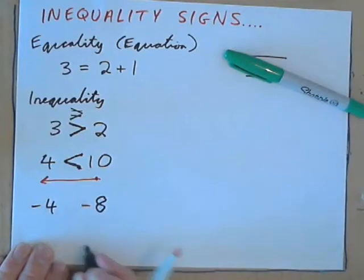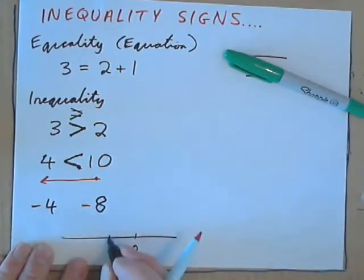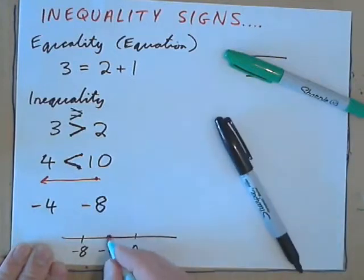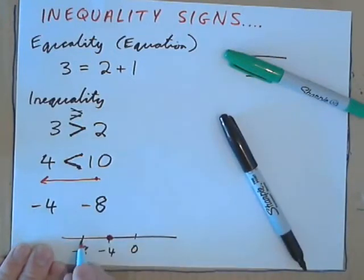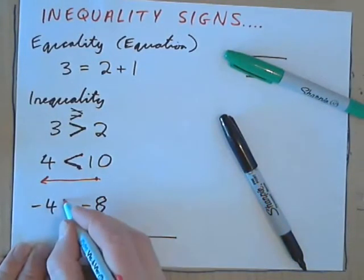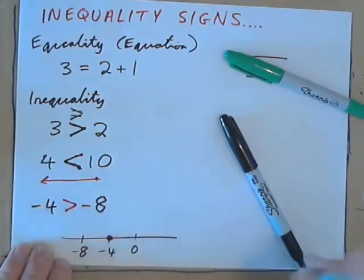So, this is actually greater than this. This is lesser. Now, if you think about a number line, here's 0, here's negative 4, here's negative 8. Negative 4 is to the right of this number, isn't it? On a number line. So, this is greater. So, negative 4 is greater than negative 8, right?